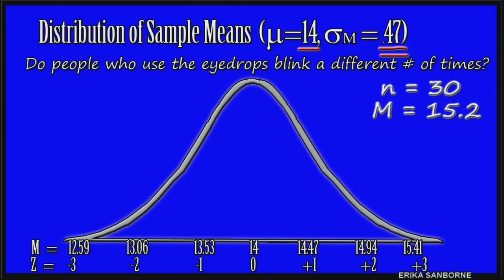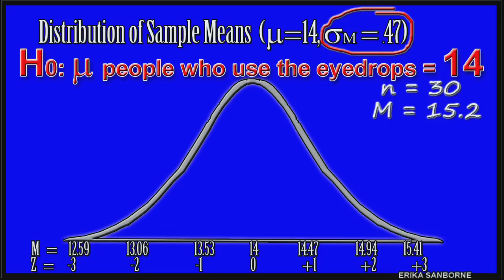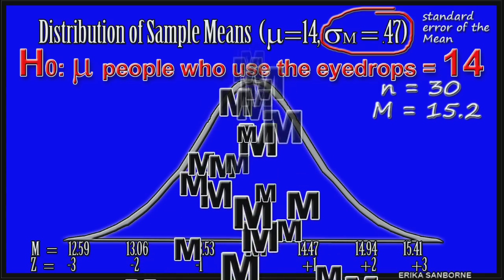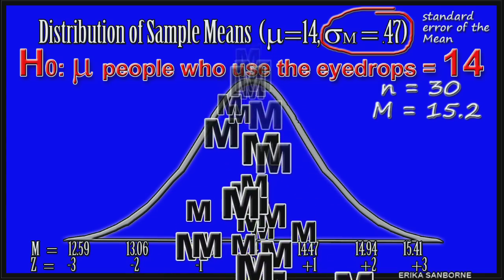The null hypothesis, remember, is that the population mean for people who use eyedrops is 14. That doesn't mean every sample of 30 people will have an average of 14 blinks. The sample means will vary on average by this much, the standard error, because people are different.